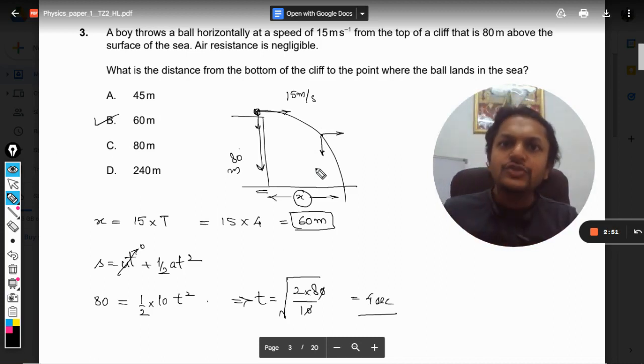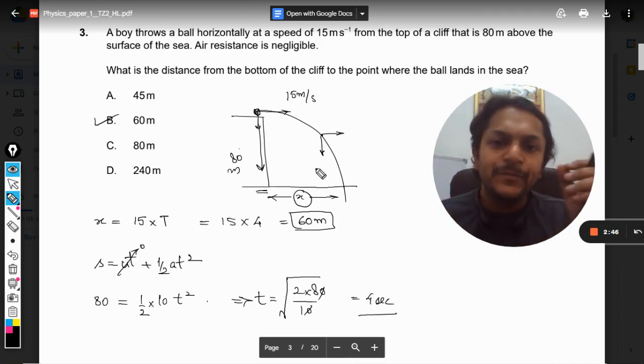Vertical motion will tell you the time duration it will take to fall, and the horizontal velocity will tell you how much distance will be traveled by the ball horizontally in the given time.